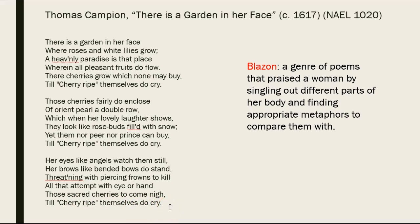"Cherry ripe" obviously has something to do with this woman advertising her sexual maturity and availability — the poet standing subject to her disclosure of such. But he develops this theme through a motif of Renaissance love poetry known as the blazon — sometimes spelled with an S instead of a Z — a genre of poems that praised a woman by singling out different parts of her body and finding appropriate metaphors to compare them with. We have her face compared to a garden.